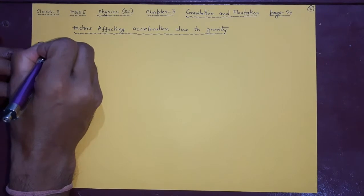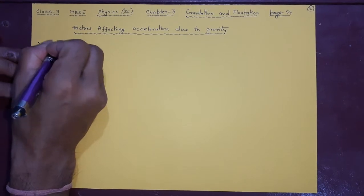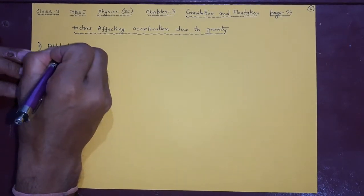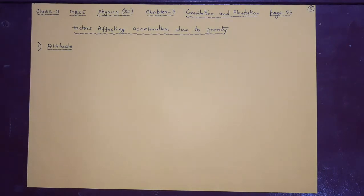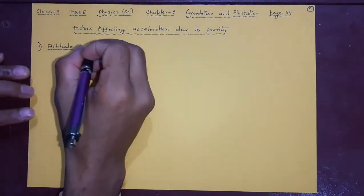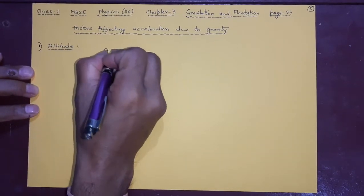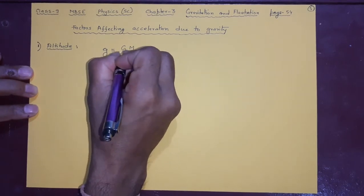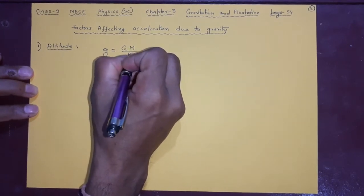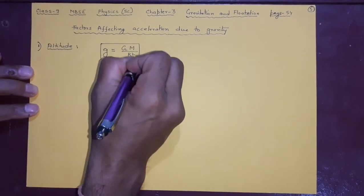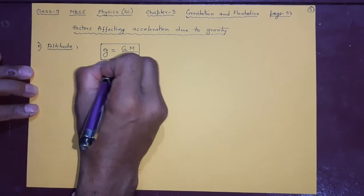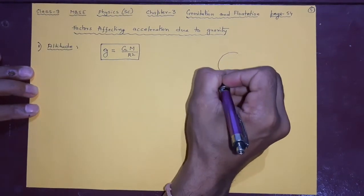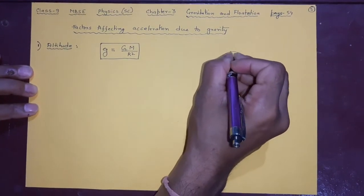The first factor is altitude — altitude is also called height. How does height affect it? It is easy to understand if you remember the formula g = GM/r². If you understand this formula clearly, you will easily understand how altitude will affect g.